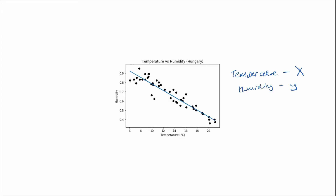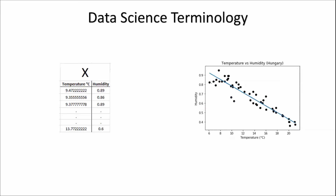Before seeing how this regression line is calculated, let's go through some basic data science terminology. The data we use to build this regression line is called our training data, which corresponds to each of the data points on the graph. Each training example is called x1, x2, x3, all the way to xm, where m is the number of training examples. The variable we are trying to predict — humidity — is our output y, with each output labeled y1, y2, y3, all the way to ym.